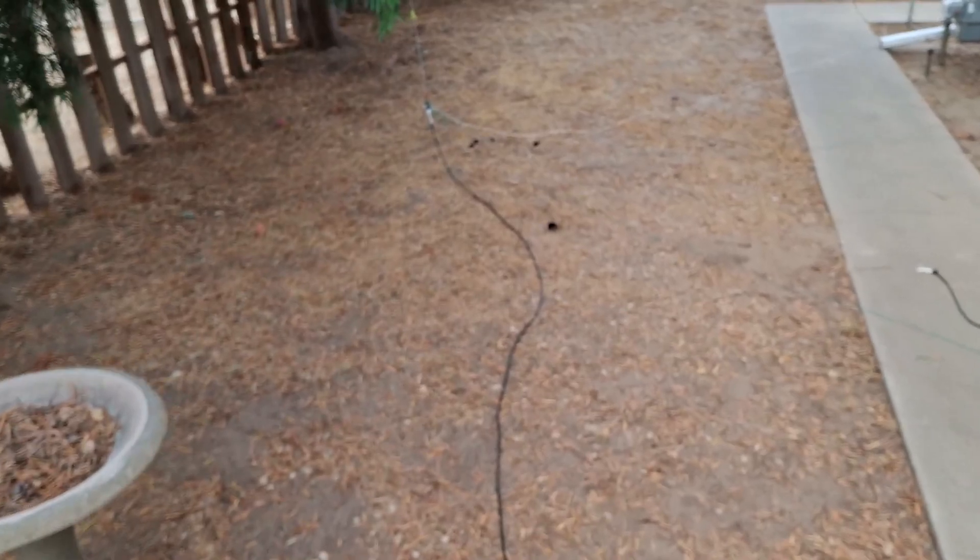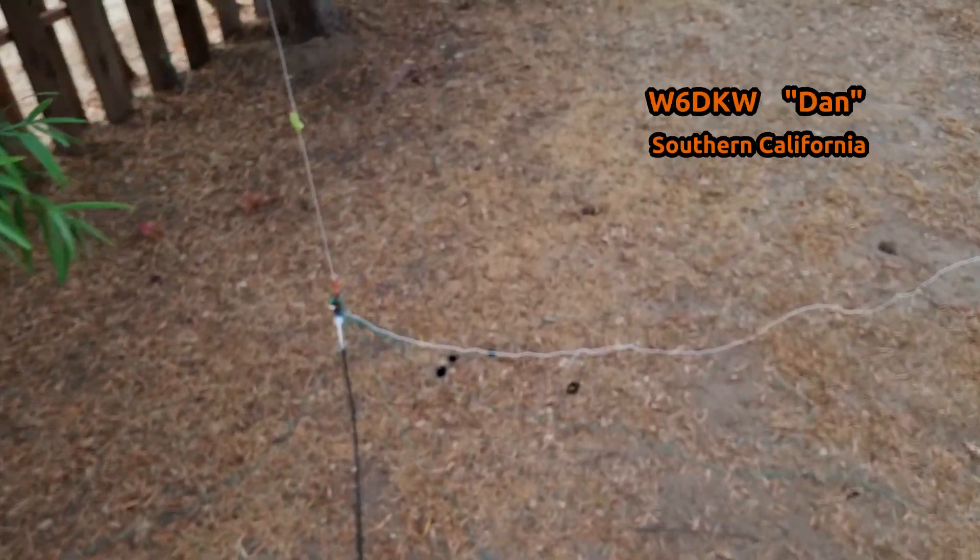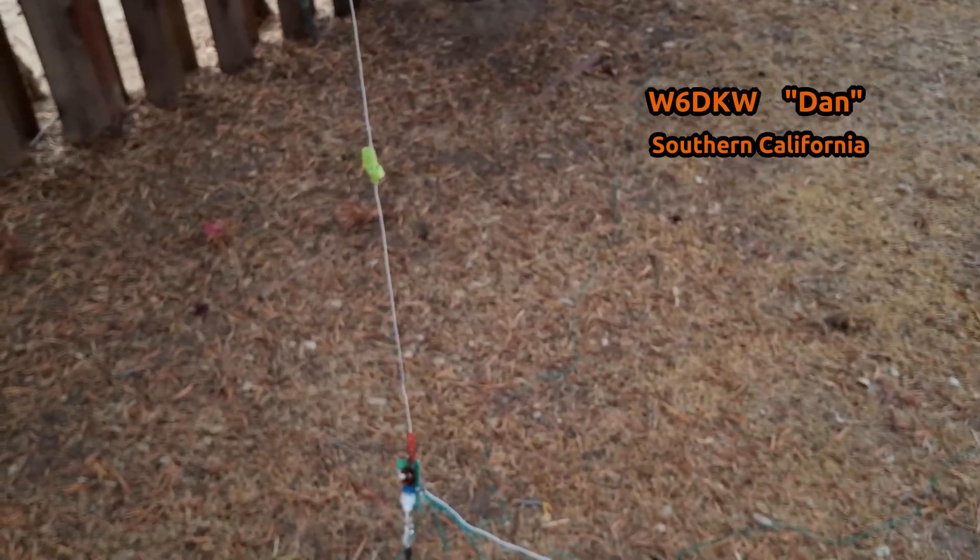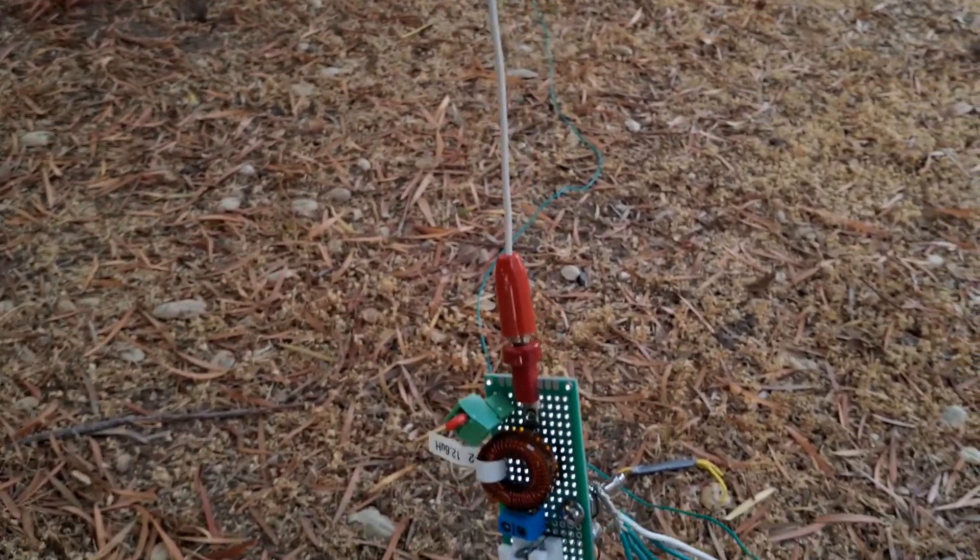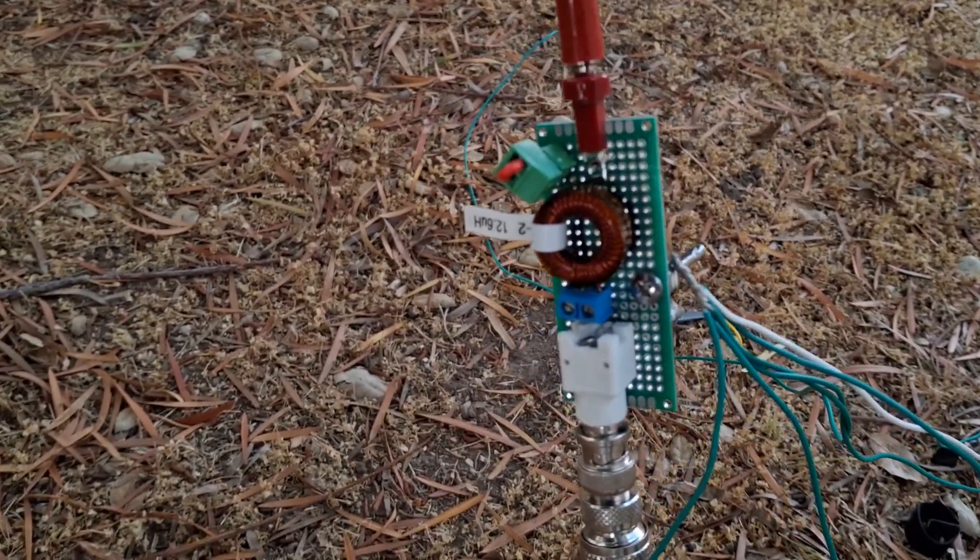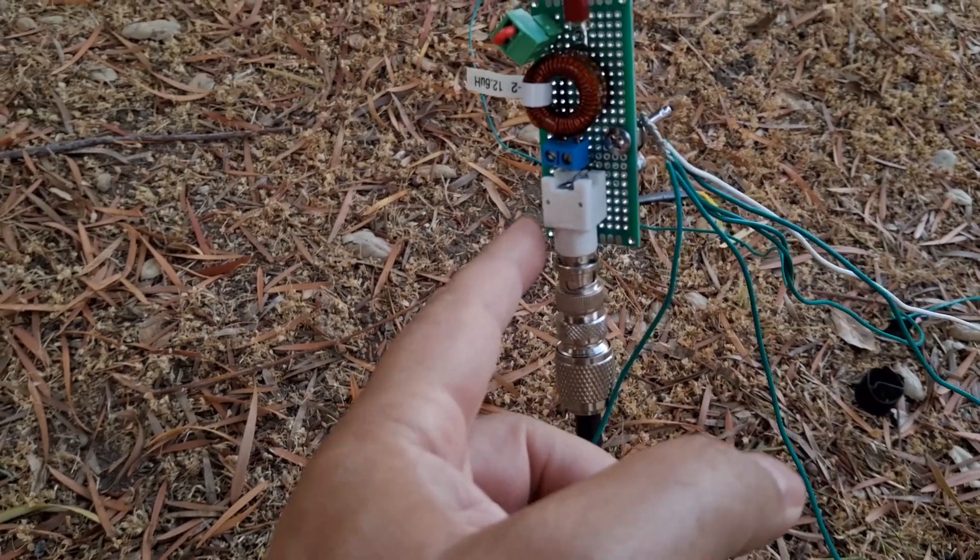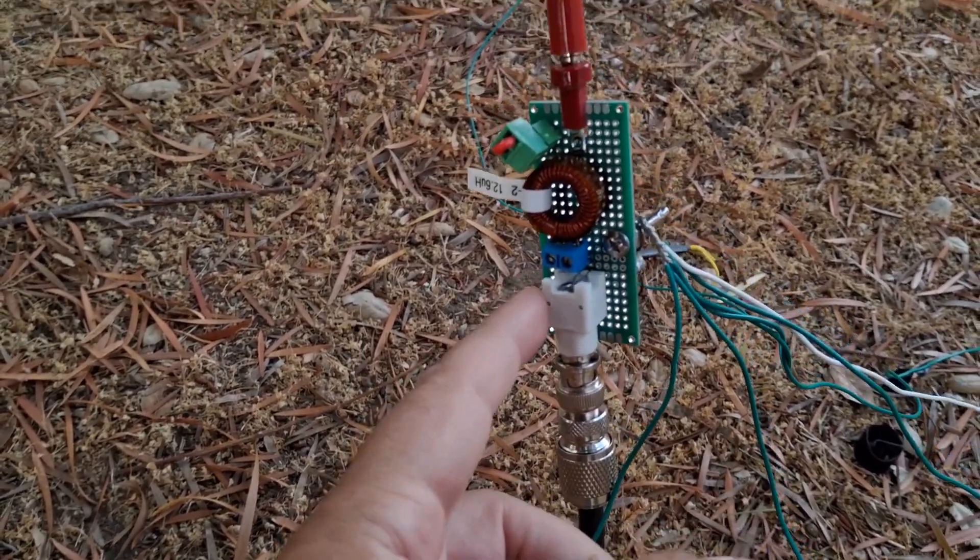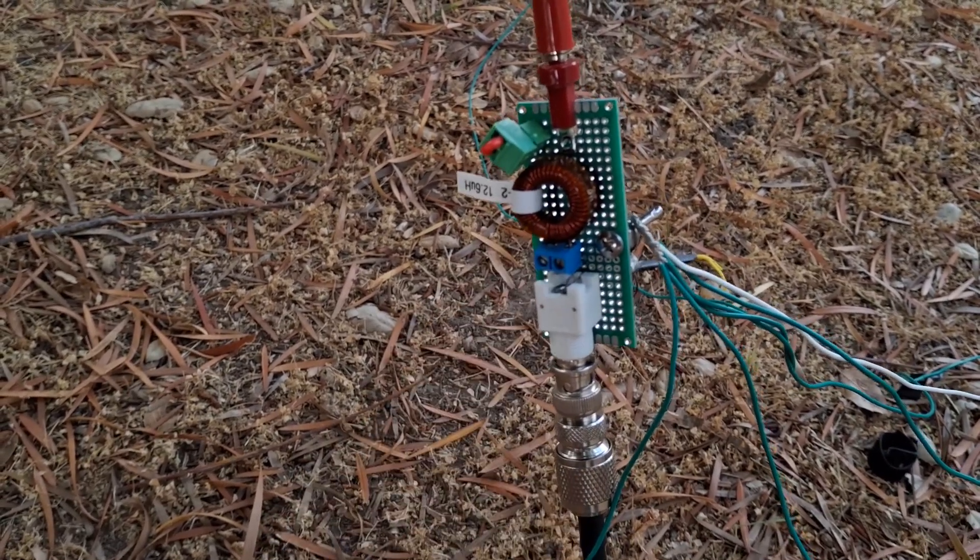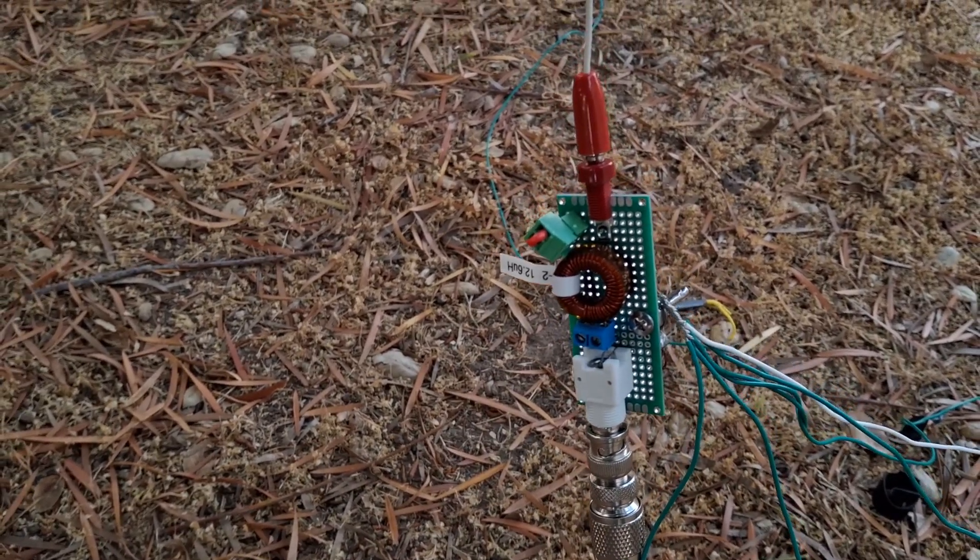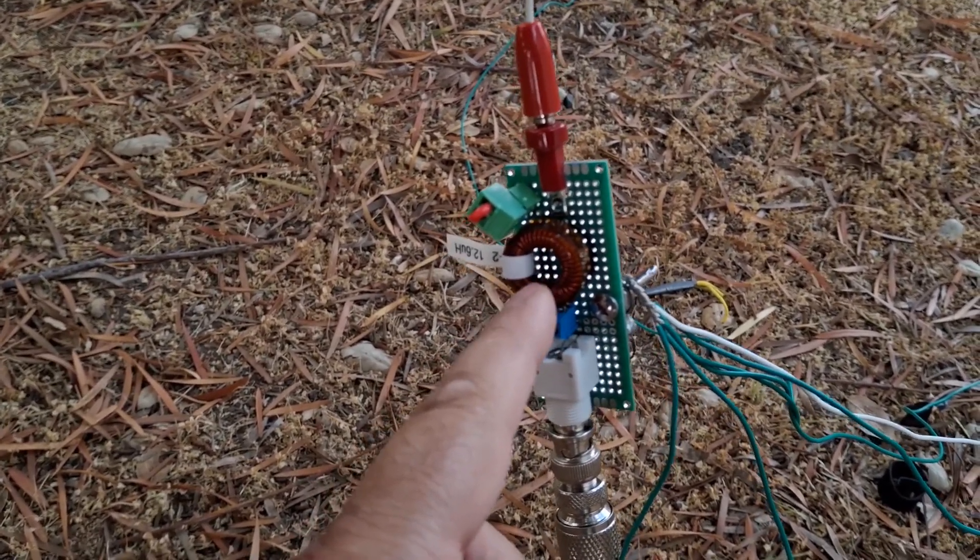Howdy everybody, we are currently in testing phase for this 40-20 antenna. Let's go over what we're talking about. So of course we have the coax coming up in here, this is a BNC connector. This looks like a transformer but it's actually an inductor, set for somewhere around 12 to 13 micro Henries.